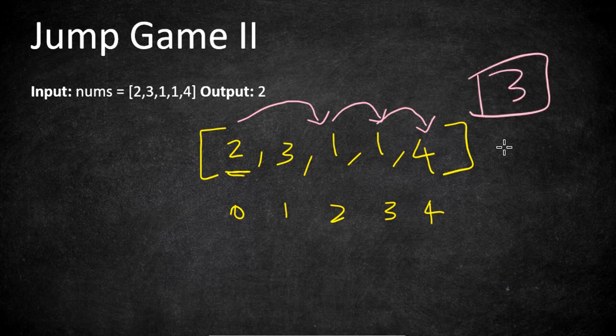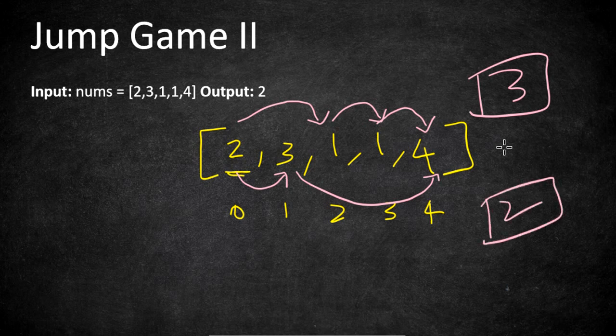If instead you take only 1 jump at the first position, you reach index 1, and from index 1 you can make 3 jumps, which takes you directly to the last position. So this path requires just 2 jumps to reach the last position — that is the minimum number of jumps, and that is going to be our output.